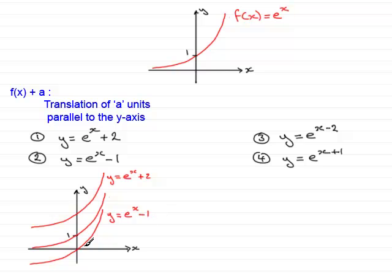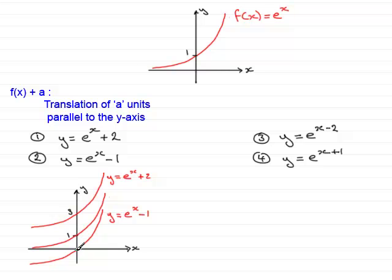You're often asked in questions like this to mark in where the graphs cross the y axis. For y equals e to the x plus 2, since we've slid the graph up 2 units, this point will now be at y equals 3. You can also get that by putting x equals 0: e to the power 0 is 1, and 1 add 2 is 3. For y equals e to the x minus 1, sliding the graph down 1 unit means the point that was at 1 is now at the origin.